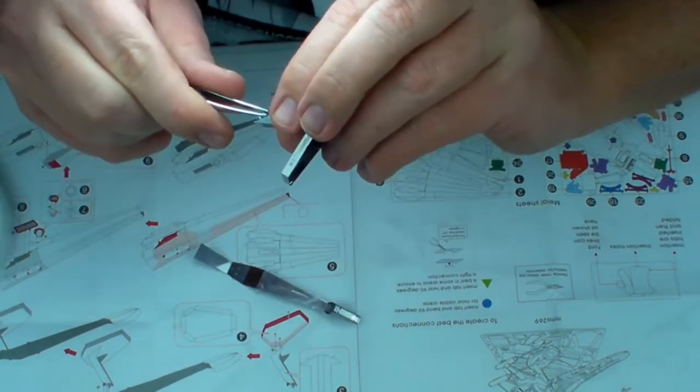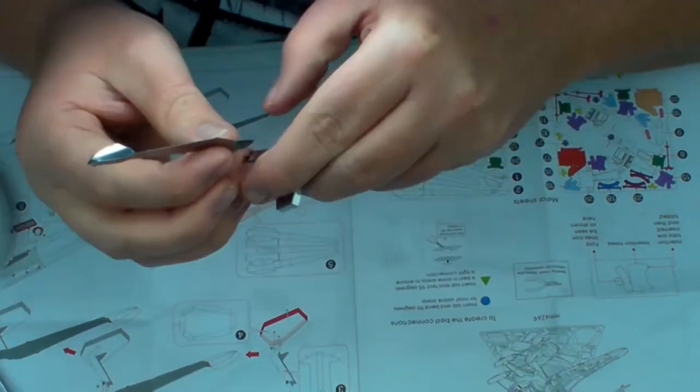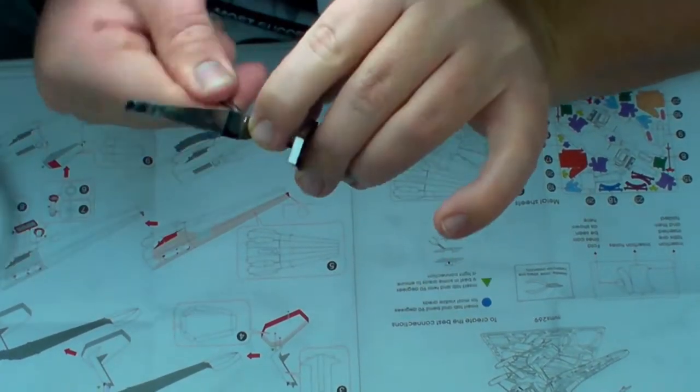Bend the middle tabs straight up to line up with the other tabs to allow it to fit to the next part. Other times you will have to bend the tabs in the same direction like this.